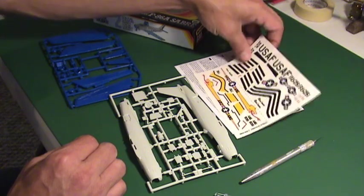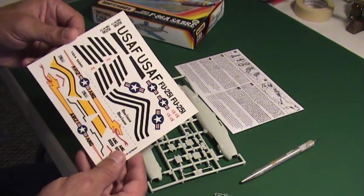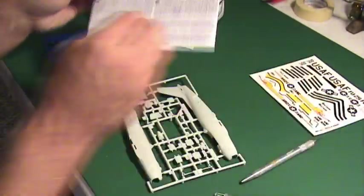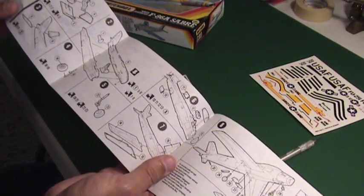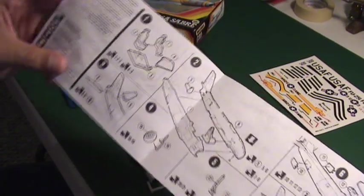Look at the set of decals and decide on the specific markings and color schemes for your model. Read the instructions and study the sequence of steps. They are not written in stone, sometimes you may need to modify them a little.